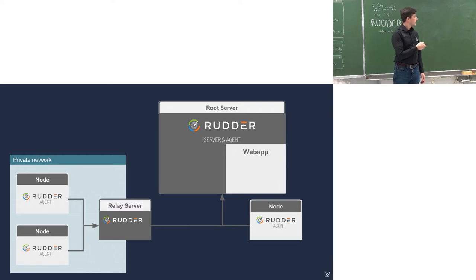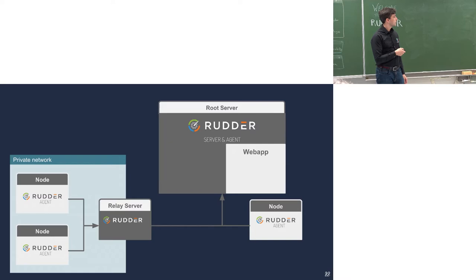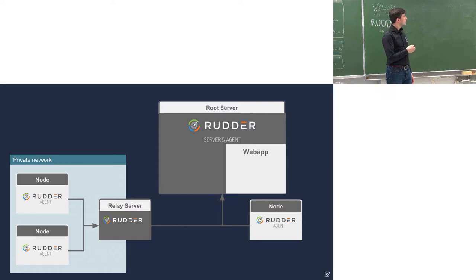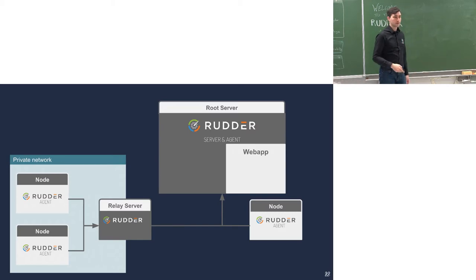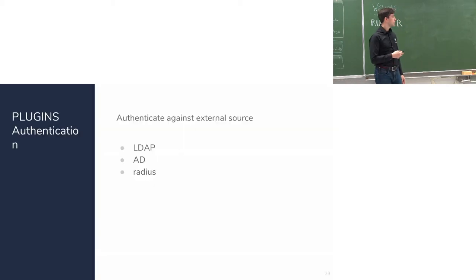Here is what was just described: the relay acts as a proxy between your nodes and the root server. This is the usual approach, and you can add relays to scale and support more nodes.